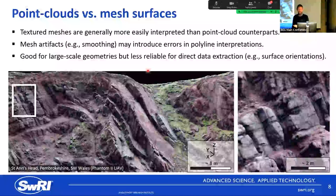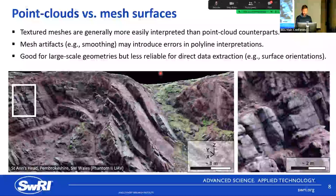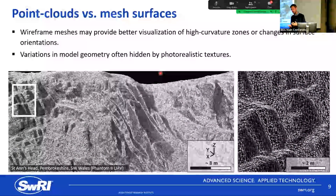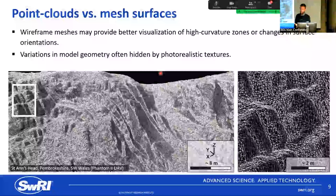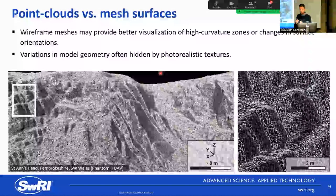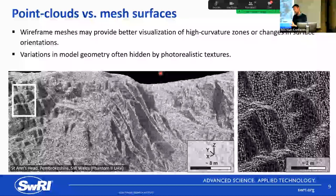A third version is untextured meshes, which do a really good job of representing changes in surface geometry and curvature. I think about this like switching between amplitude, cosine of phase, and curvature attributes in seismic interpretation. Switching back and forth between these different realizations of the outcrop is probably best practice — you can often see things you might not have seen before, or decide that something isn't actually a fault.